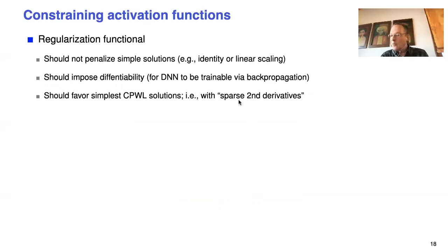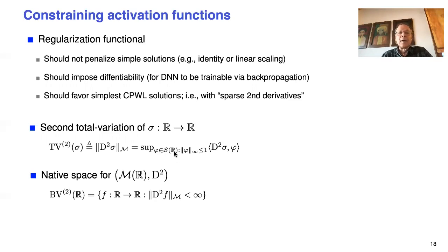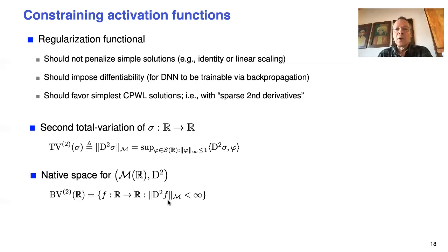This suggests using a special regularization I call total variation 2 (TV2). It's defined as a supremum with inner products against test functions in Schwartz class, which are infinitely differentiable. This gives a native space of all functions with finite second total variation, over which we optimize. For example, for the ReLU, you can compute this quantity and get exactly one.